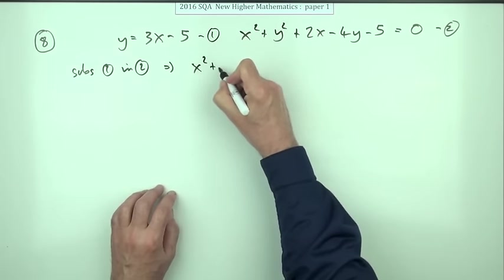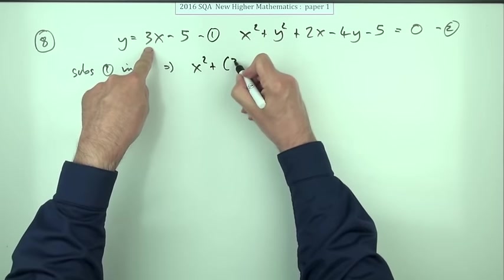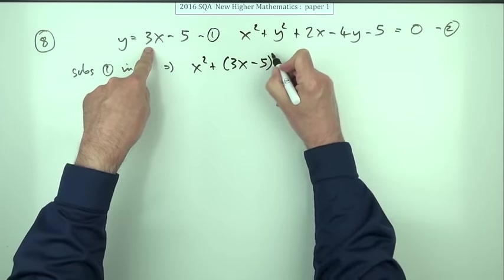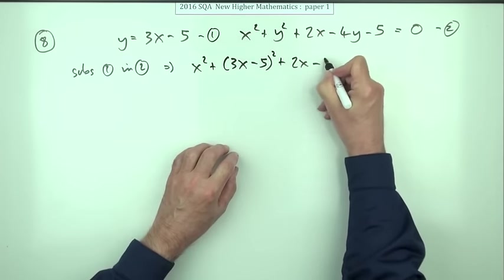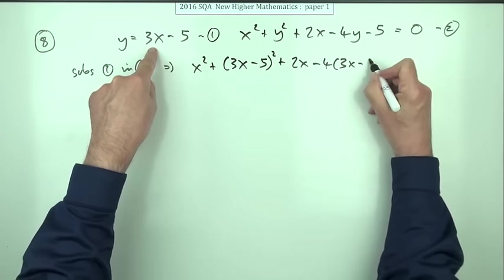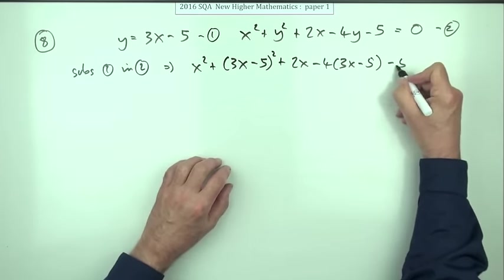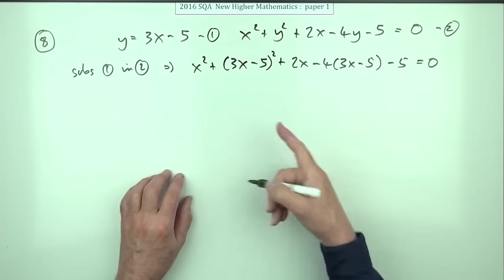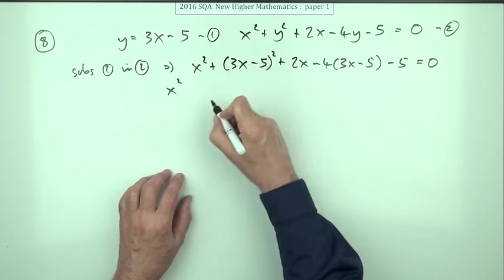Plus 2x minus four times instead of y it'll be 3x minus 5 minus 5 equals zero. Expand that out, just give it a little bit more room.